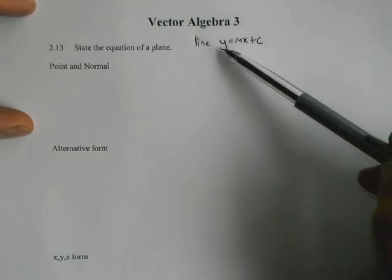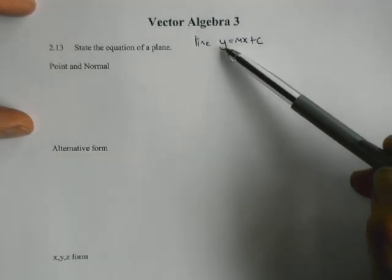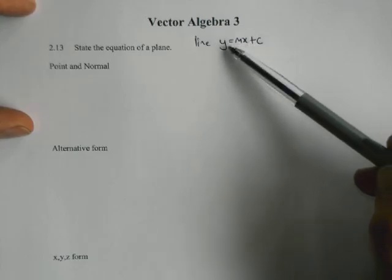Okay, so x and y are variables, m and c will be fixed values, but any combination of x and y that work, that this equation works for, will be on that line.